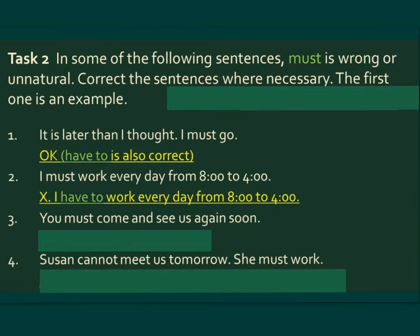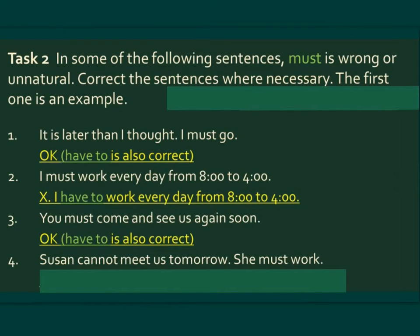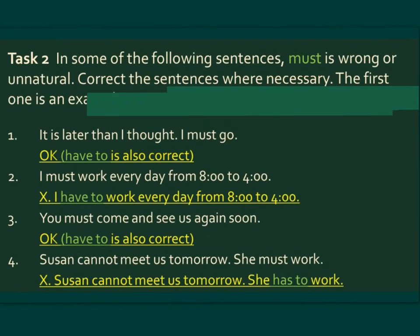Number three: You must come and see us again soon — this is correct. Note that using have to is also correct. Number four: Susan cannot meet us tomorrow, she must work — this is incorrect. The correct version is: Susan cannot meet us tomorrow, she has to work.